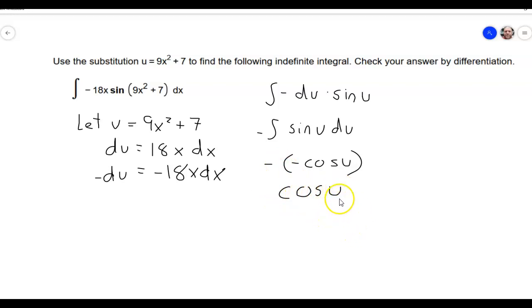And finally, we're going to substitute back. So instead of the u, this is going to be 9x squared plus 7. So this is the cosine of 9x squared plus 7.